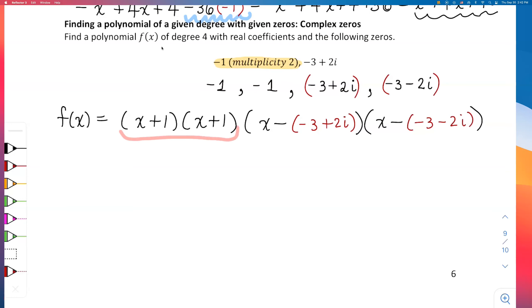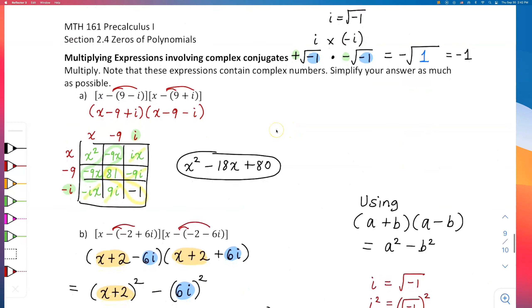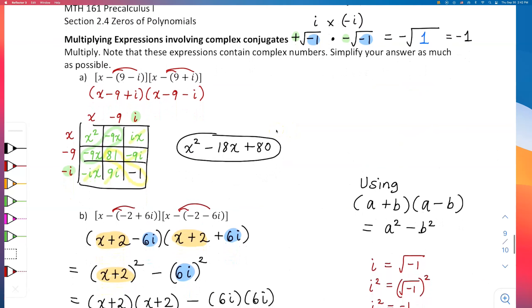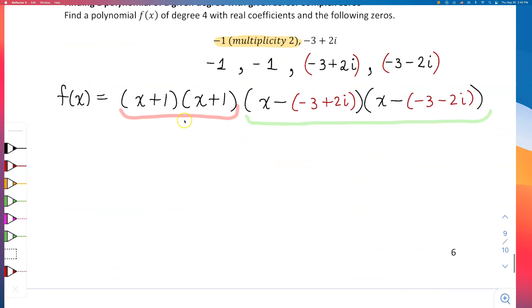I will do (x + 1) times (x + 1) using a regular FOIL method, and then I will multiply these two. I will do this long, you know, that's what we did on the previous video—how to multiply expressions involving complex conjugates. After getting the answer from the red and the green, I will multiply the red and the green together. So we are looking at three multiplications. I'll start with the one in red.